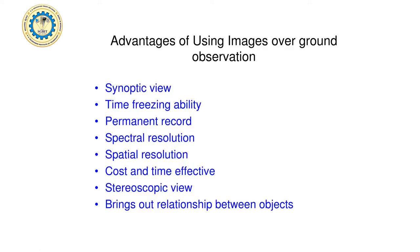The advantages of using satellite images over ground observation include: they provide time-freezing ability, they are permanent records, they offer spectral and spatial resolution, they are cost-effective and time-effective, and they can produce stereoscopic images, which will be discussed in the next part.